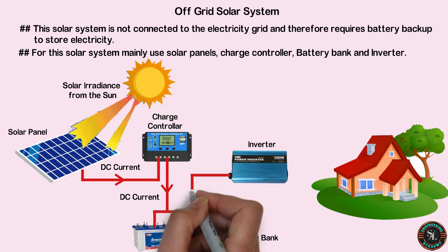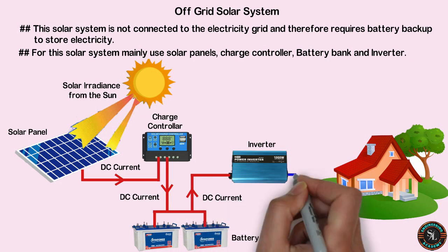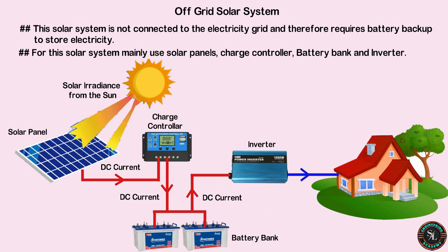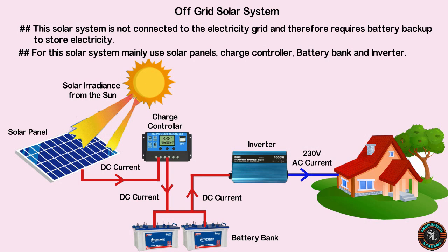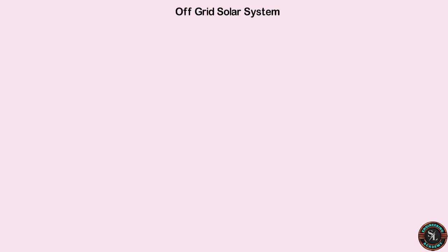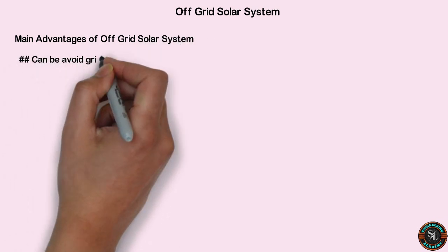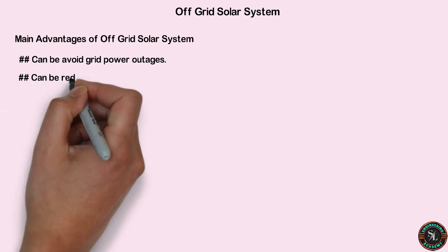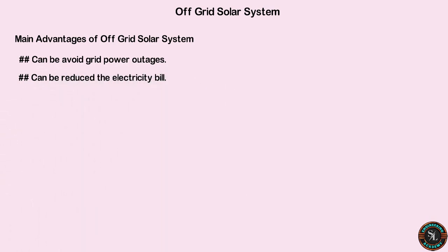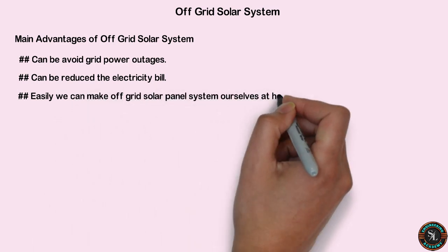When electric power is required for the home, DC current is taken from the battery and goes through the inverter. The inverter converts the DC current into 230 VAC current, which then goes to the home AC appliances. The advantages of the off-grid system include: avoiding grid power outages, reducing the electricity bill, and the ability to build the system yourself at home easily. Off-grid solar systems can also be used as an easy alternative for rural and remote areas.